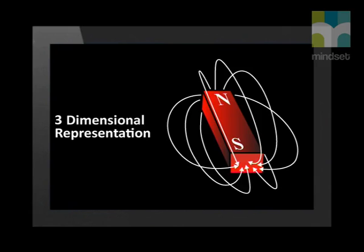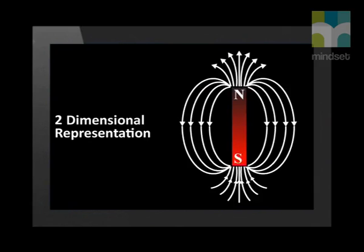The magnetic field lines can be represented on a diagram in three dimensions or in two dimensions as you can see here. Where the lines are very close together or most dense, the magnetic field strength is very strong.